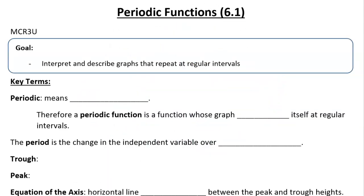I'm going to be working through a very short handout here; if you don't have it, see a link in the description. Our goal is to interpret and describe graphs that repeat at regular intervals. Periodic simply means repeating. If something has a period, it has something that repeats at regular intervals, so a periodic function is a function whose graph repeats itself at regular intervals.